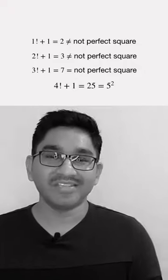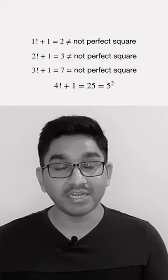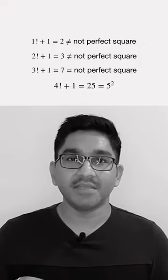7 is still not a perfect square. If I take n as 4, so 4 factorial plus 1, that is 24 plus 1, 25. And 25 is 5 square. So we got one solution: n equal to 4 and m is 5.